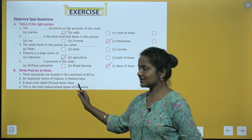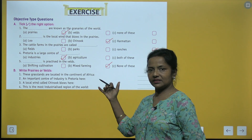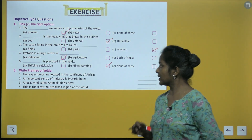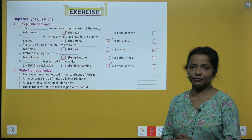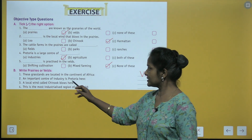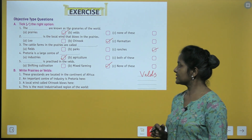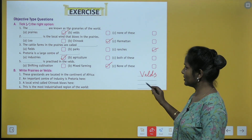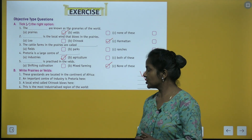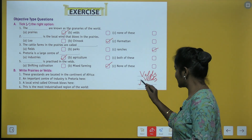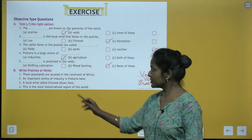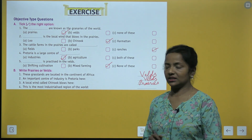Write prairies or velds: grasslands located in the continent of Africa — velds. An important center of industry is Pretoria — velds. A local wind called Chinook blows here — prairies. This is the most industrialized region of the world — velds.